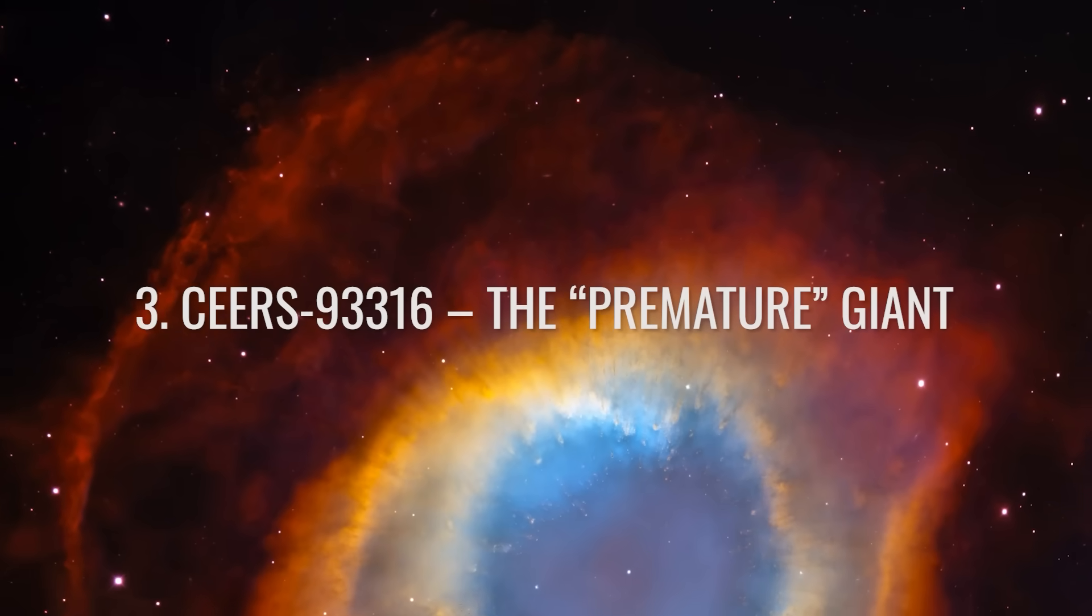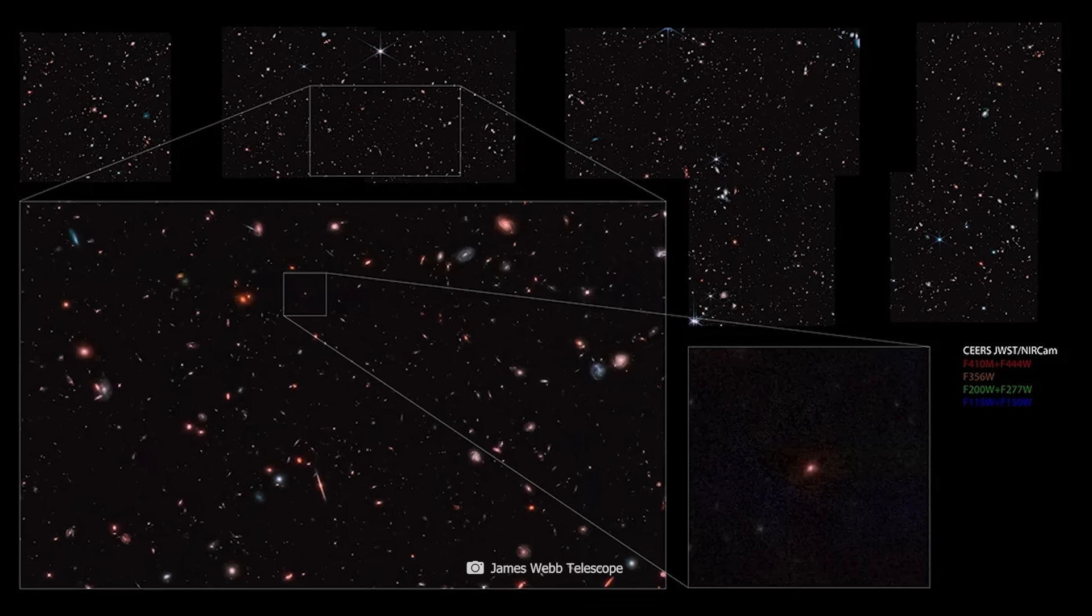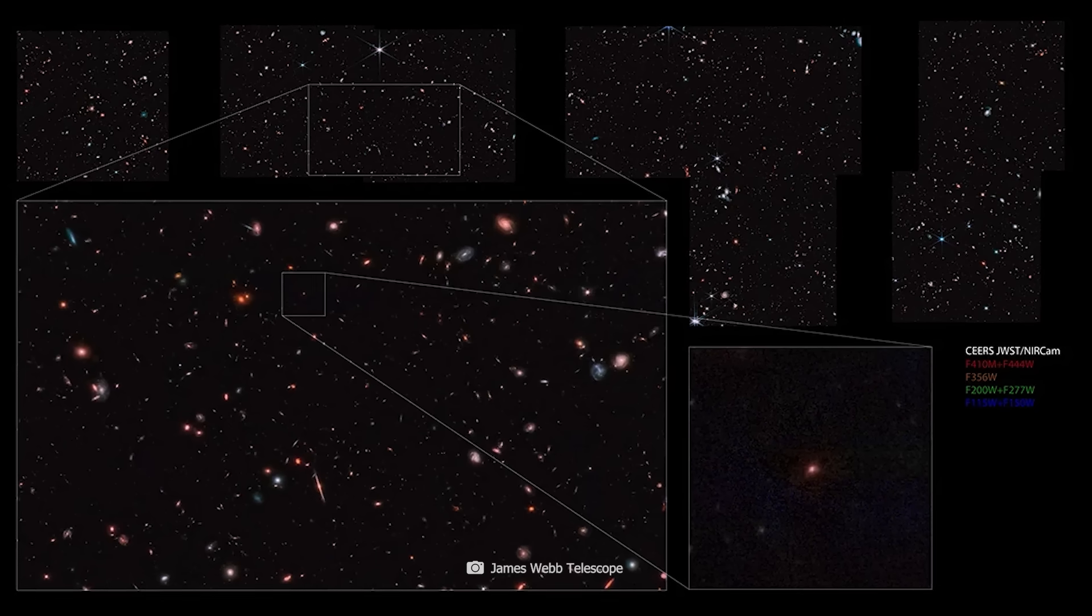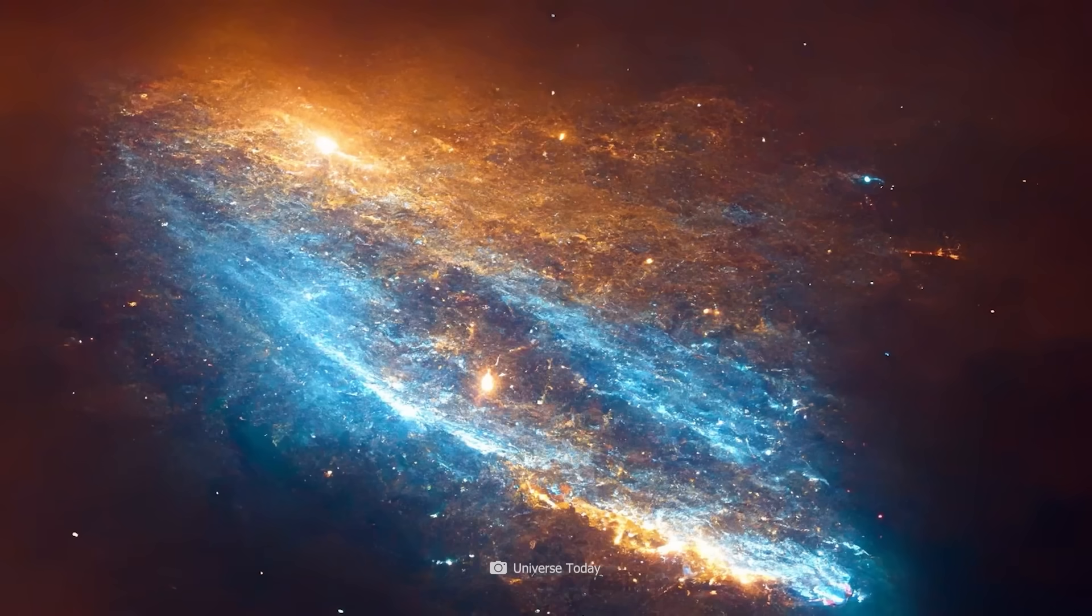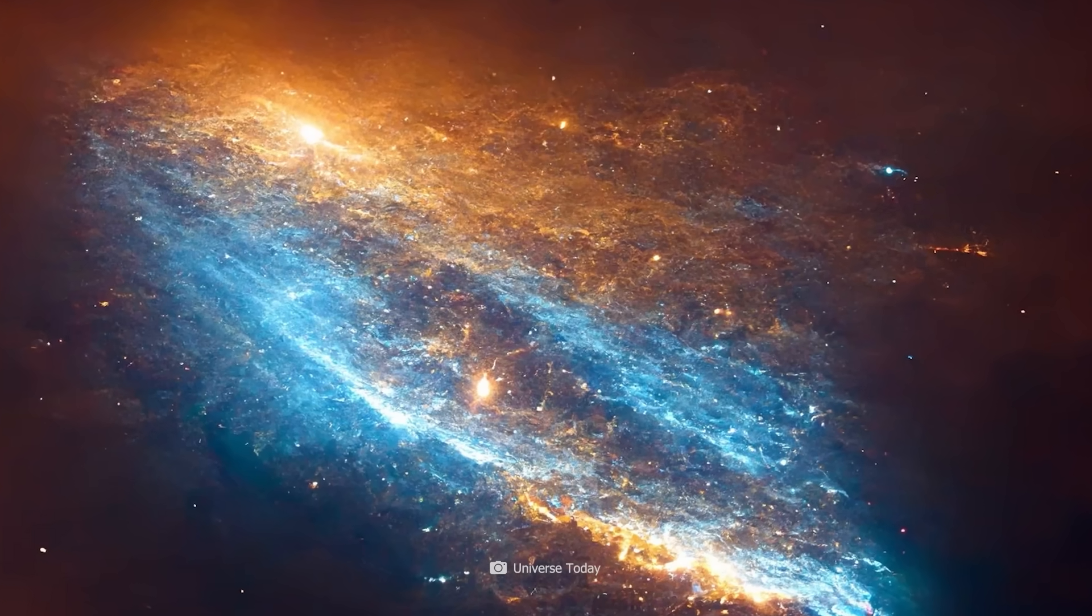Number three: Sears-93316, the Premature Giant. This galaxy is not only old, but also extremely massive. According to current data, it may have developed much faster than previous theories would allow. A galaxy of this extreme size, at such an early stage, is a mystery.